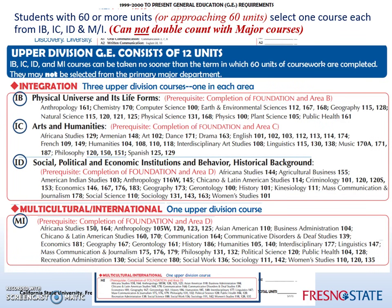Note that these upper division courses cannot be selected from your primary major. However, they may count toward a second major, a minor, or certificate requirements.